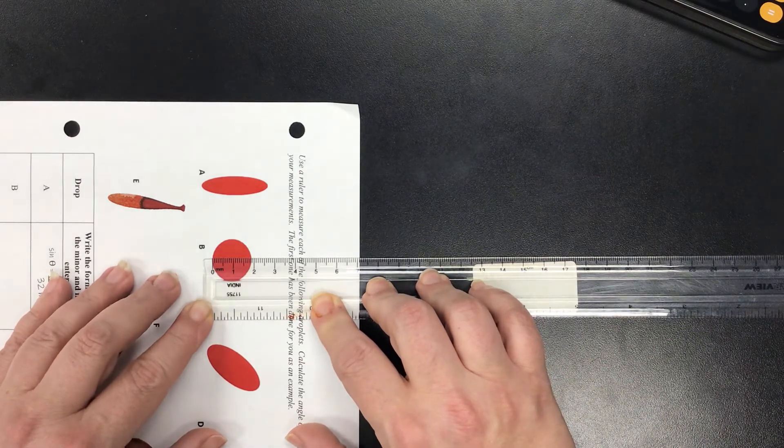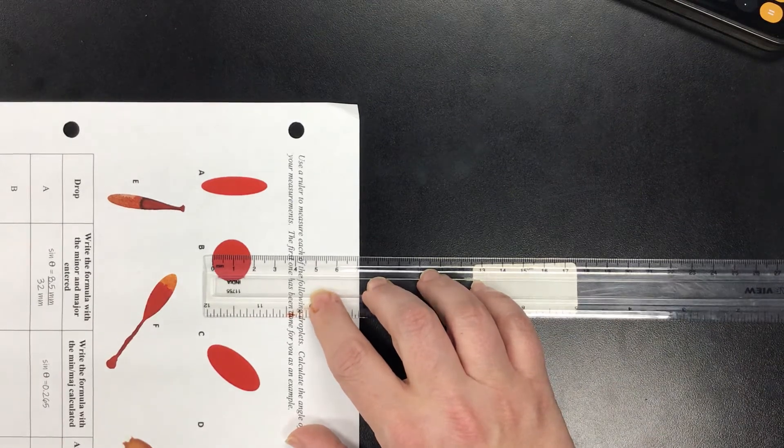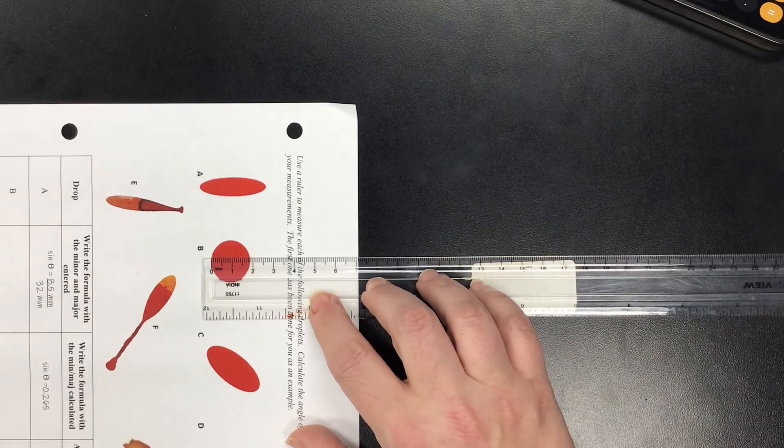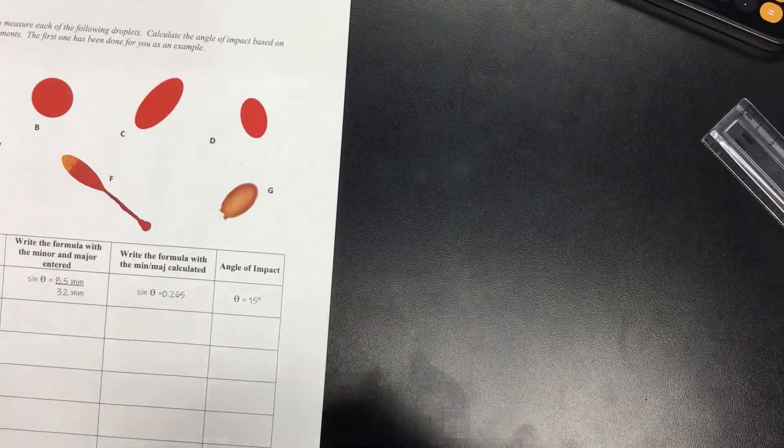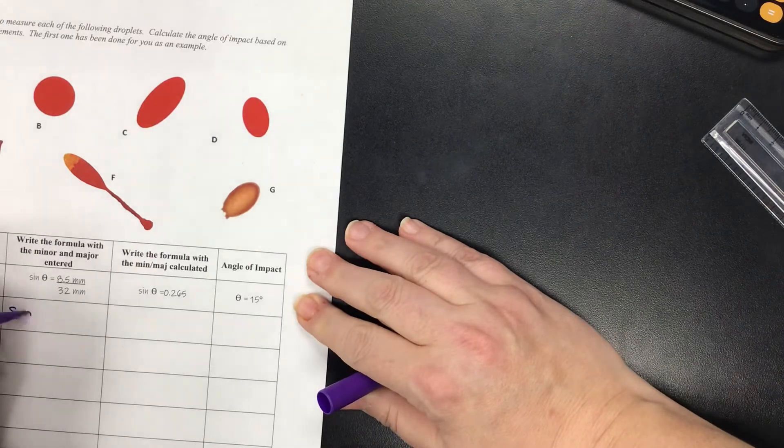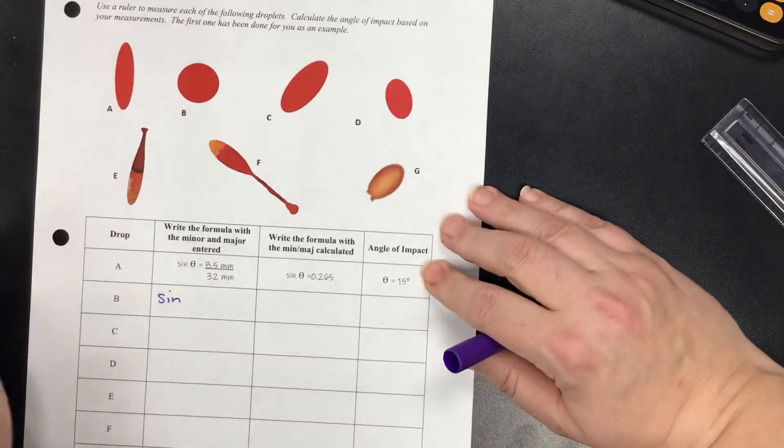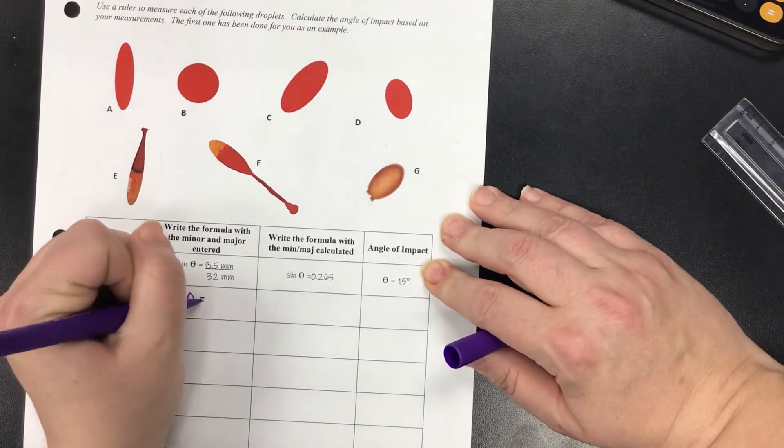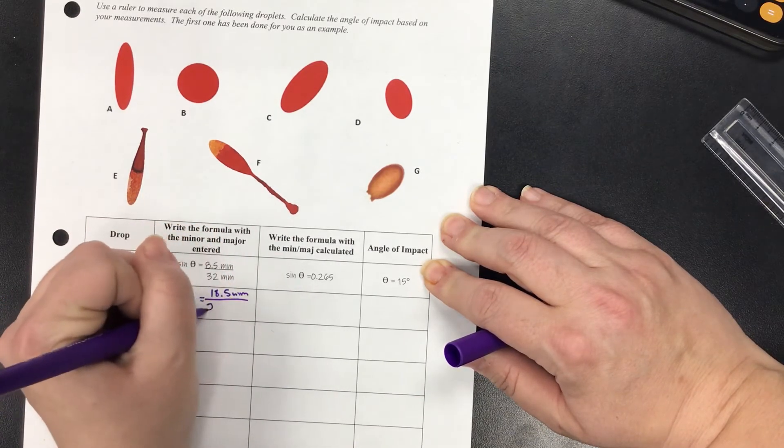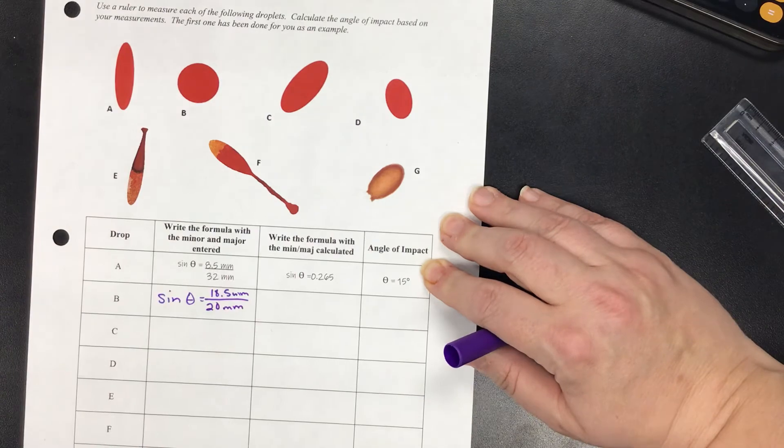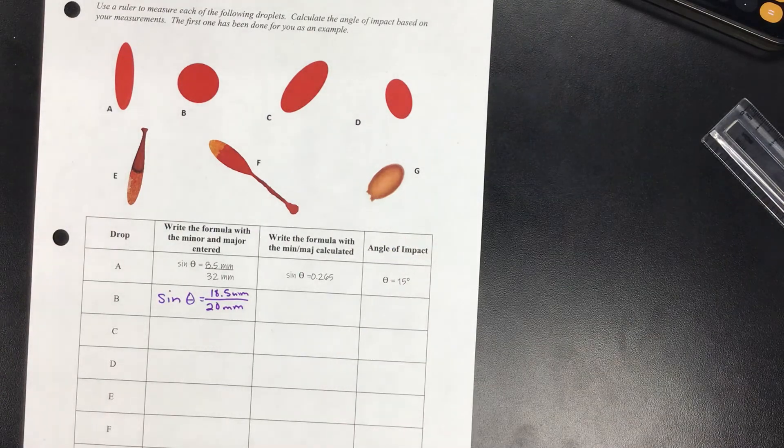I'm going to call it 18 and a half millimeters. So I've got sin(θ) = 18.5 mm over 20 mm, so I've got my problem written in there.